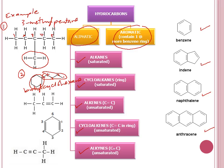Next, we're going to look at alkenes. This is an alkene which has three carbons: one, two, and three. So we call this propene.